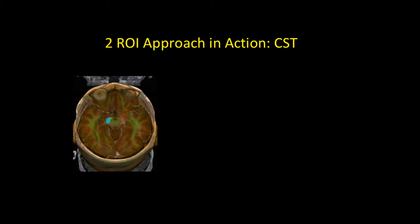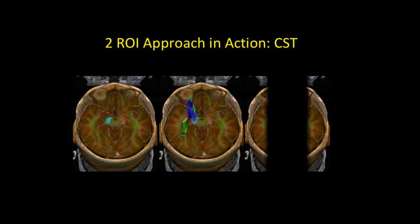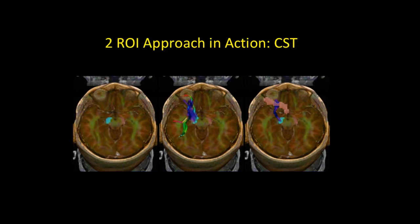We use a two-point approach. First, you place the seed point in the cerebral peduncle, which is blue in this case, and then you create fibers with your post-processing software. There are too many or spurious fibers on this one-point approach, so then we create a second point, an inclusion point, in the ipsilateral motor cortex, in this case pink, to connect the two points.